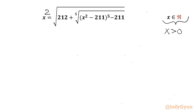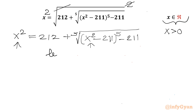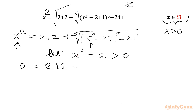I will consider squaring both sides — power 2 on both sides — so the square root and square cancel. We get x² = 212 + fifth root of (x² − 211) whole power 5, minus 211. Now since x² appears, it is better to substitute x² = a. Since x² cannot be negative, a must be positive.